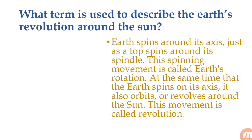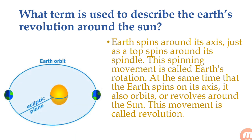At the same time the earth spins on its axis, it also orbits or revolves around the sun. This movement is called revolution. Here you can see an image of the earth orbit, which shows it taking revolution around the sun and taking rotation. You can see the day and night also in this picture.